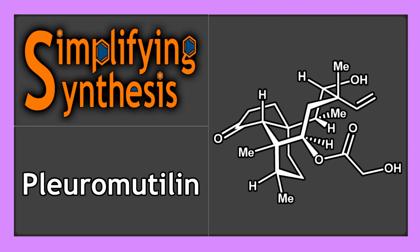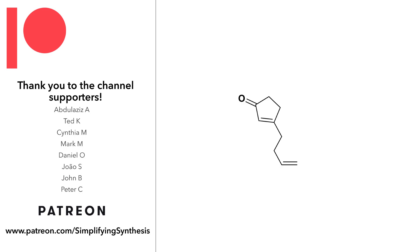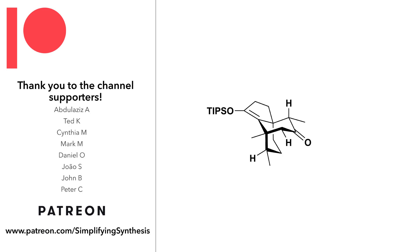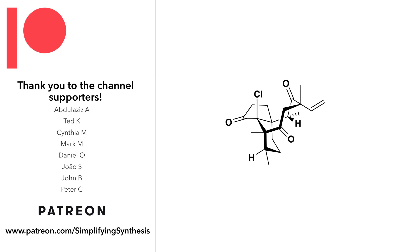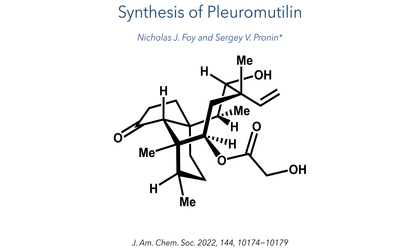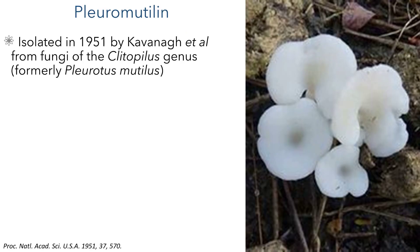Welcome back to Simplifying Synthesis. In this video we are going to look at the total synthesis of pleuromutalin. This work was published in JACS by Nicholas Foy and Sergey Pronin. Pleuromutalin was first reported in 1951 by Kavanagh et al. and was isolated from the fungi of the Cletopelis genus, formerly known as Pleurotus mutilus.